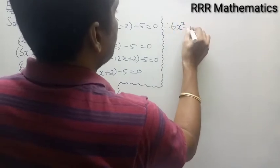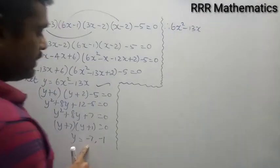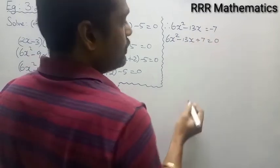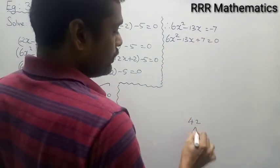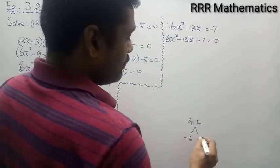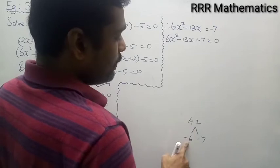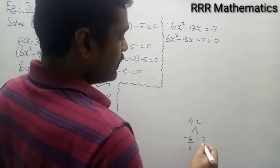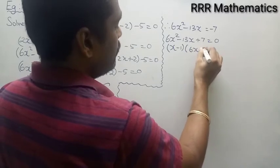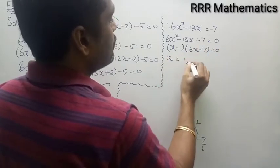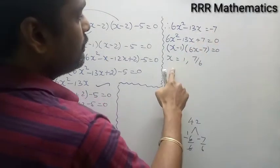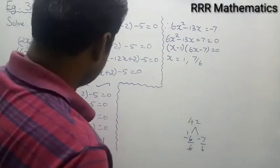Now, since y = 6x² - 13x, for y = -7: 6x² - 13x + 7 = 0. The product is 6 × 7 = 42 and the sum is -13, so we split as -6 and -7. This factors as (x - 1)(6x - 7) = 0, giving x = 1 or x = 7/6.